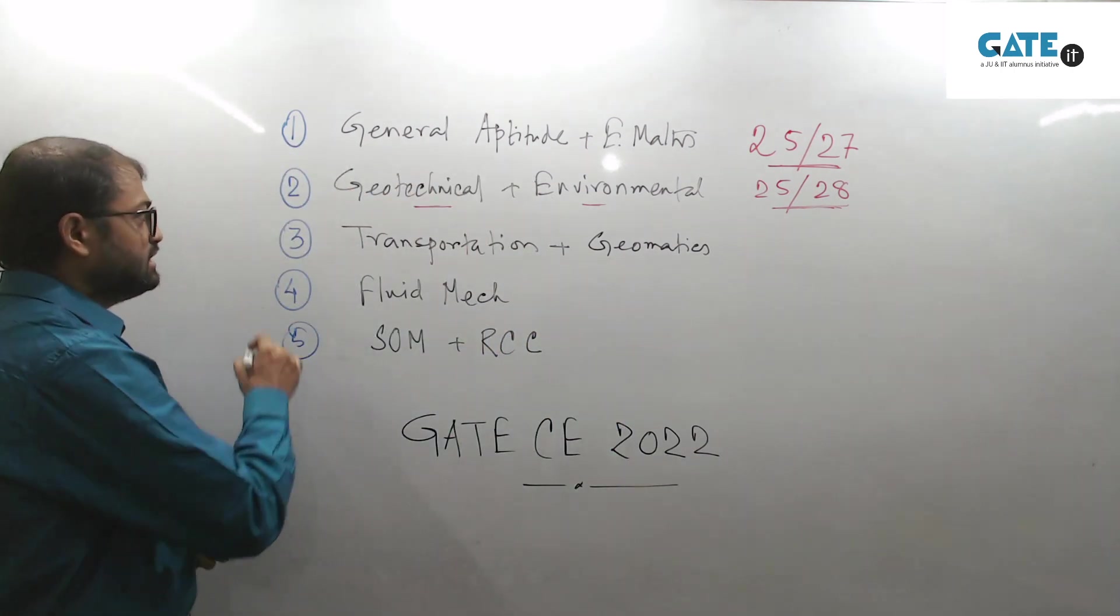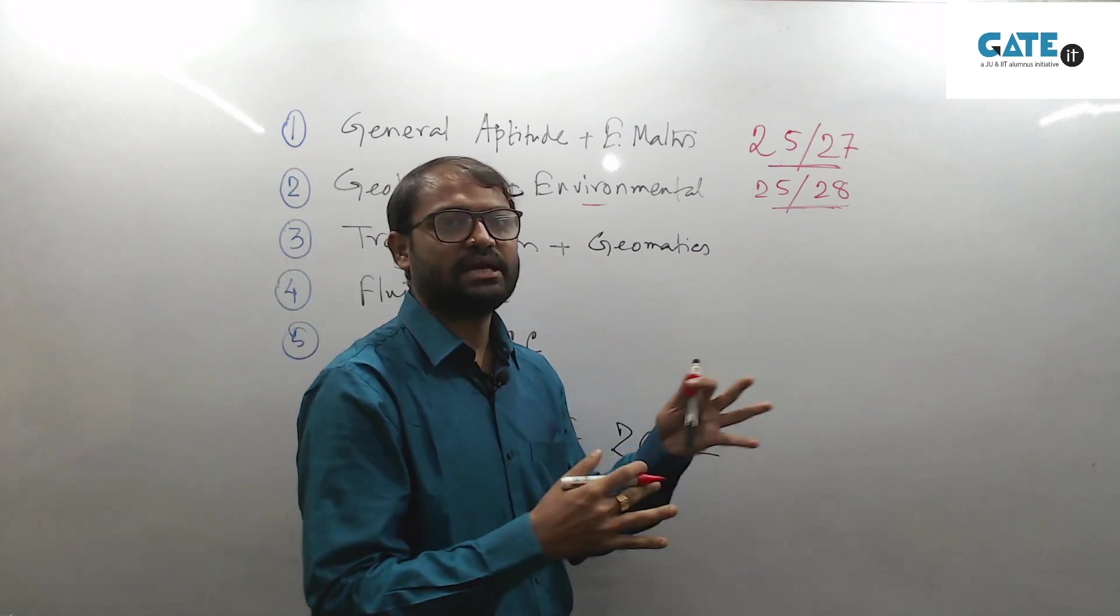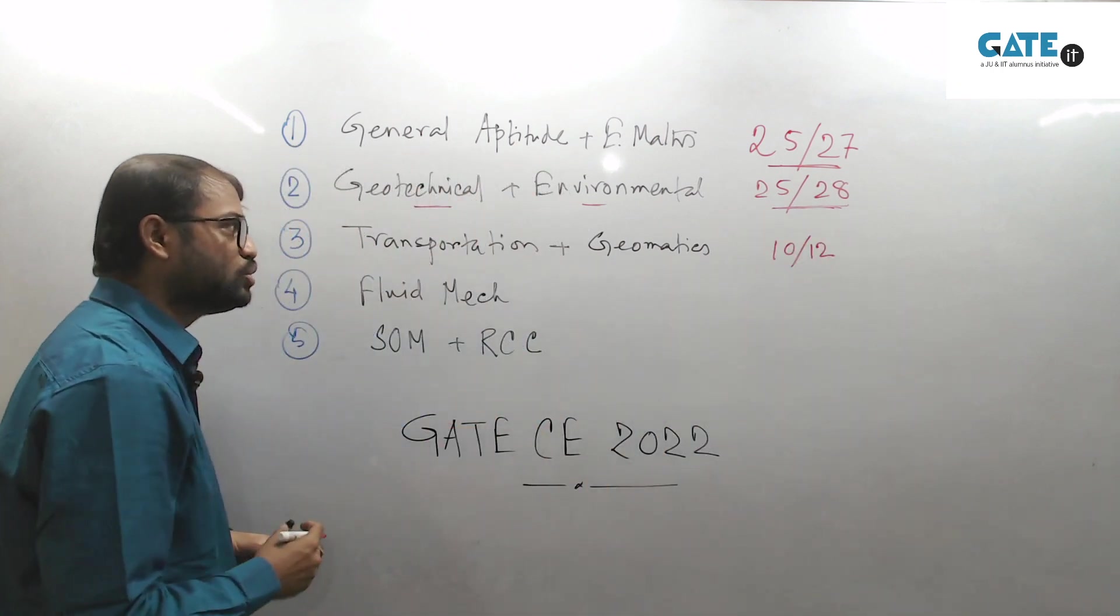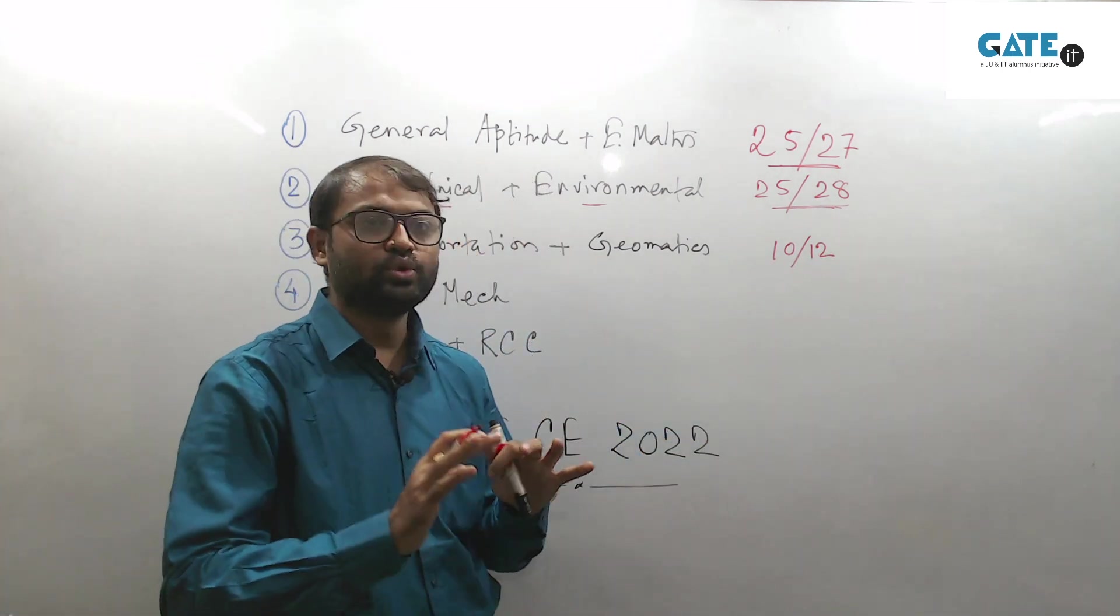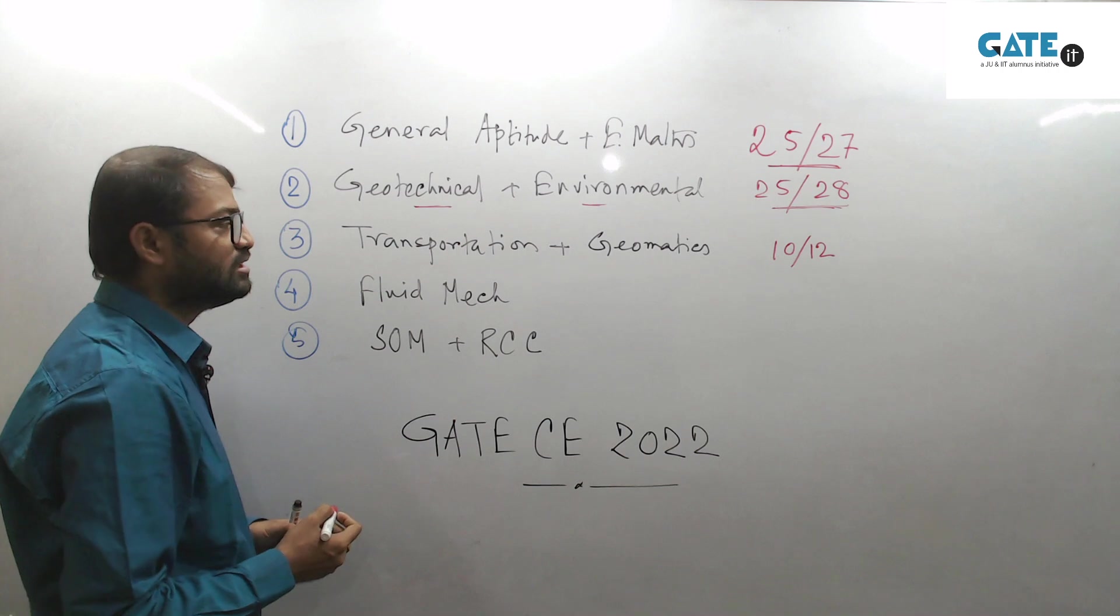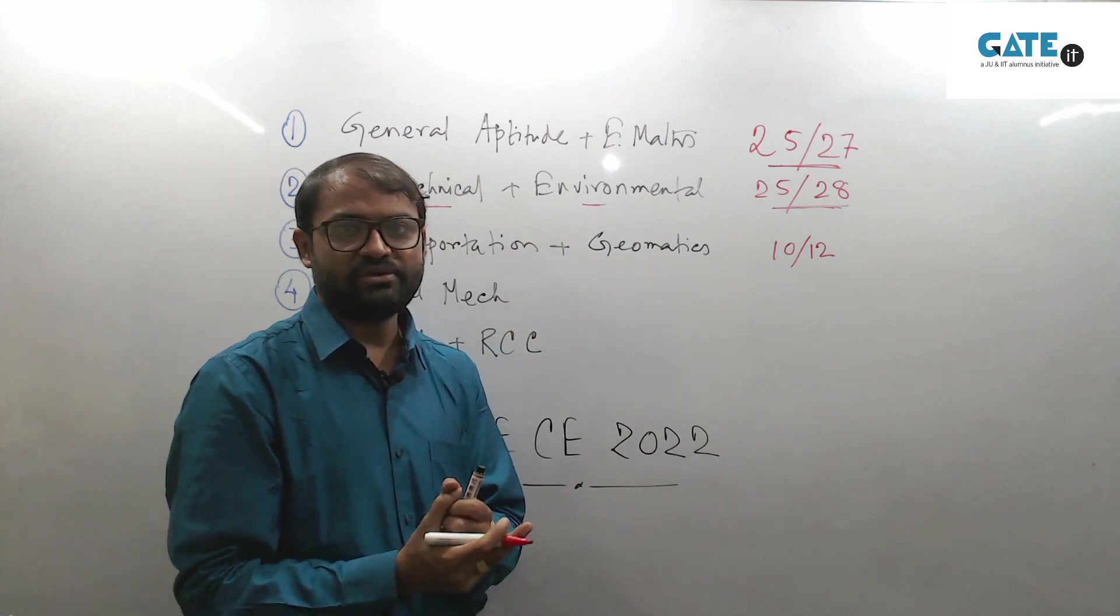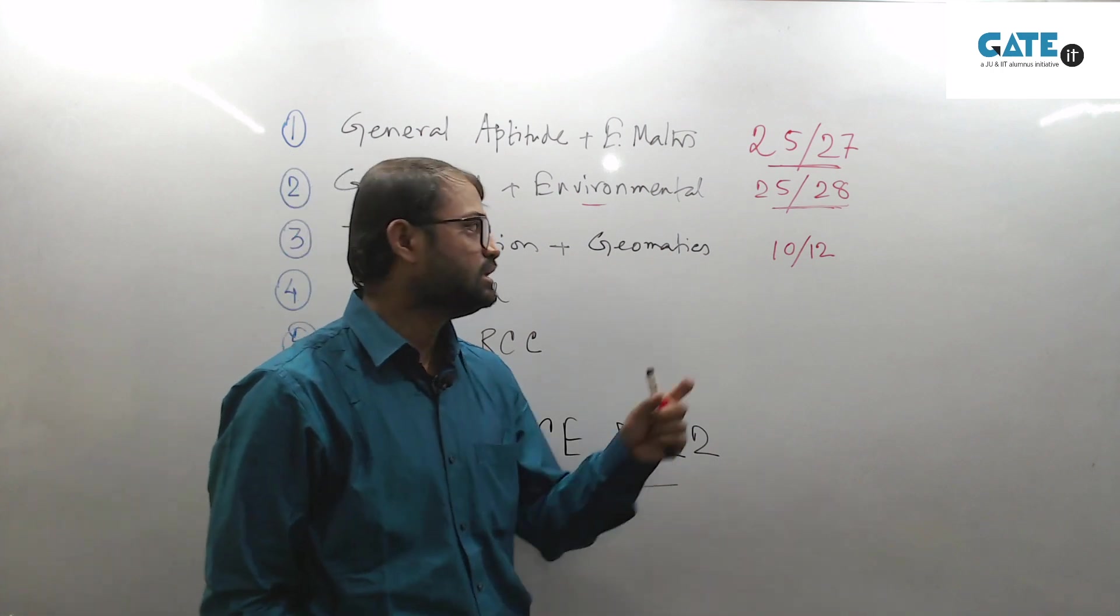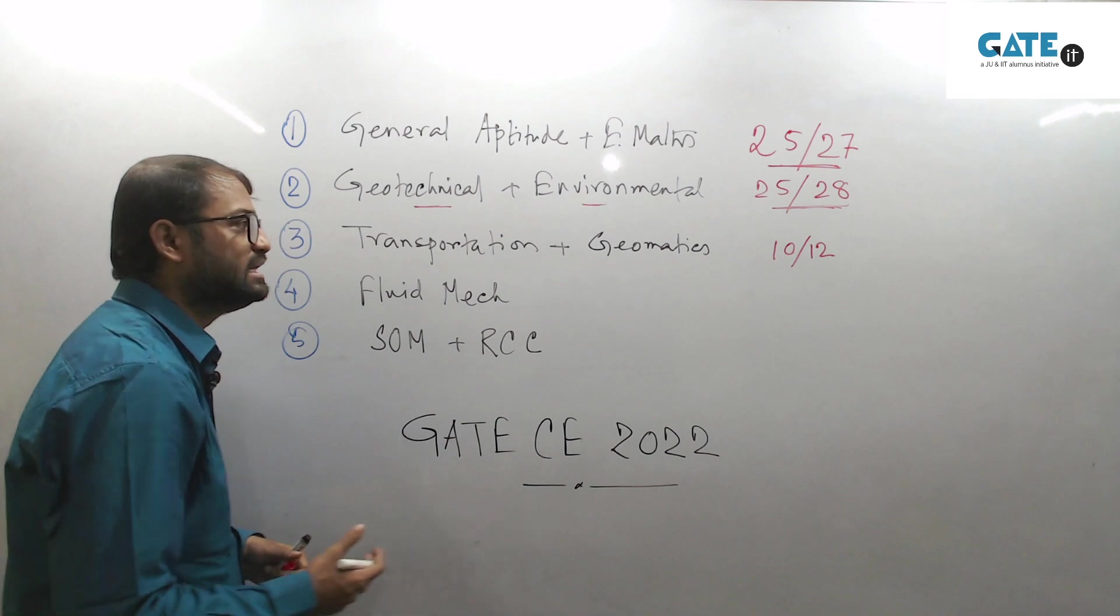Next, this is important because transportation and geomatics, whatever marks they are carrying, may be 10 to 12, sometimes 14. I am considering 10 to 12 marks. To obtain this 10 to 12 marks, you don't have to do much botheration like geotechnical engineering and environmental engineering. For geotechnical and environmental you have to put your effort, but to obtain a good score from transportation and geomatics part, that is not essentially required. It is comfortably easy to understand and easy to perform.